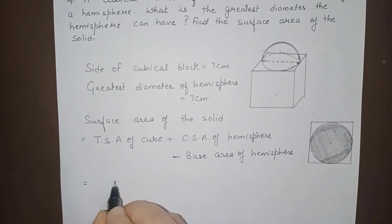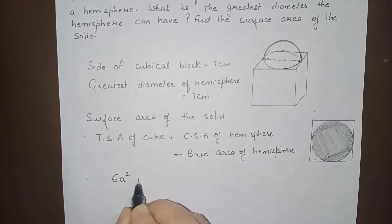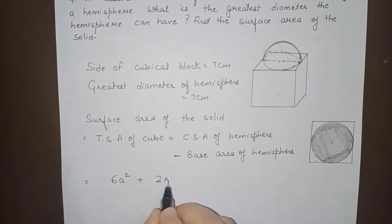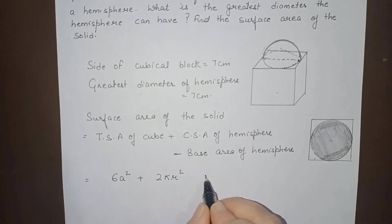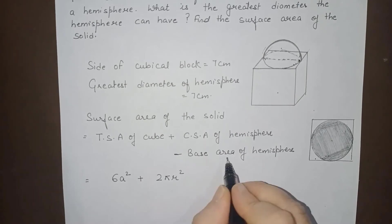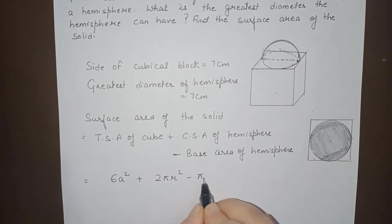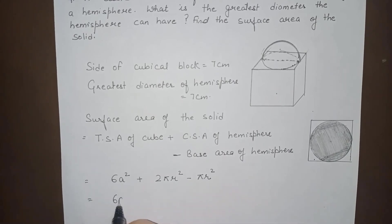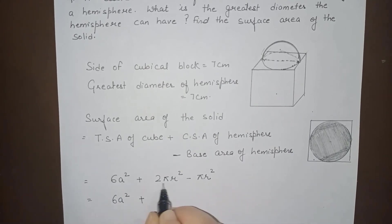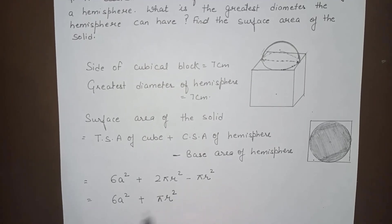The total surface area of the cube uses the formula 6a². The curved surface area of the hemisphere is 2πr². The base of the hemisphere is a circle, so its area will be πr². Therefore, the expression becomes 6a² + 2πr² − πr², which simplifies to 6a² + πr².